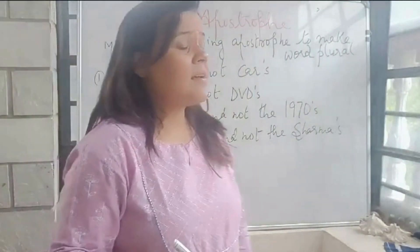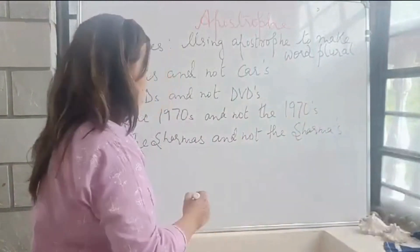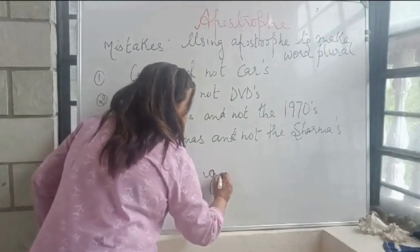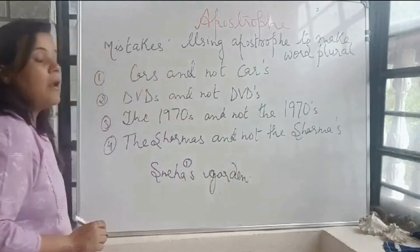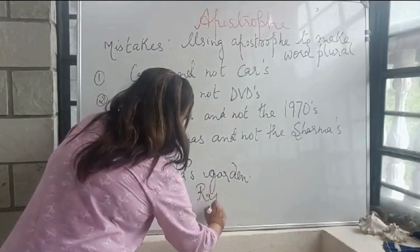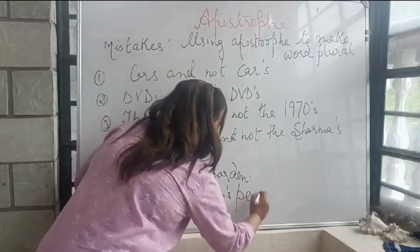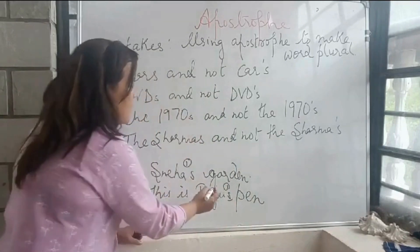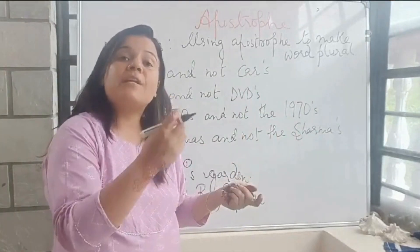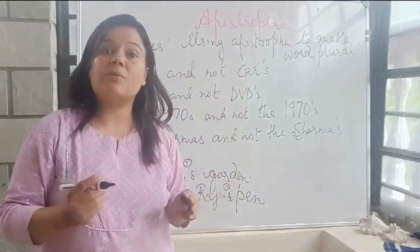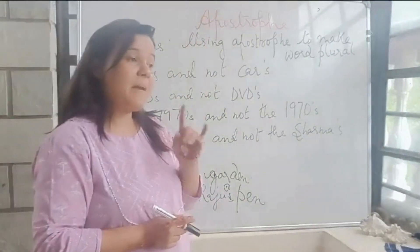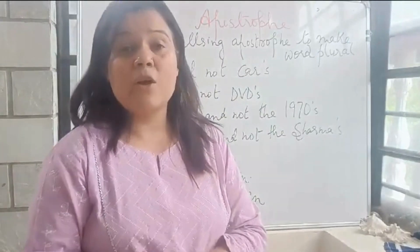This is Sneha's garden — Sneha ka garden hai. So I will write it as her name: Sneha's. Ye apostrophe lag gya. Sneha's garden. This is Raju's pen. Here I have an apostrophe — yeh us ka pen hai, yeh Raju ka pen hai. Toh yeh jo Hindi ka 'ka' hai, uske liye hum English mein apostrophe lagate hai — jab hum kisi ki ownership, kisi ki belonging ke baare mein batate hain. This is one of the basic golden rules you should remember while applying apostrophes.